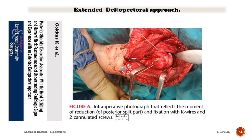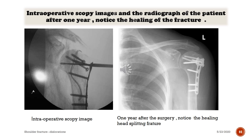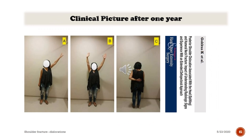Intraoperative photograph shows the moment of reduction of the posterior split part and fixation with K-wires and two cannulated screws. Intraoperative fluoroscopic image confirms fixation. One year after surgery, notice the healing of the head-splitting fracture. Clinical picture after one year shows functions very near to normal.